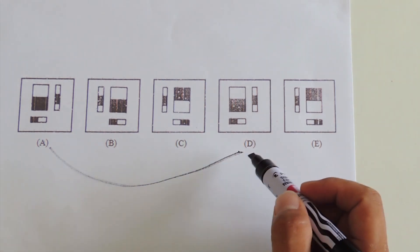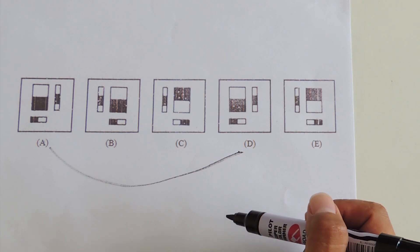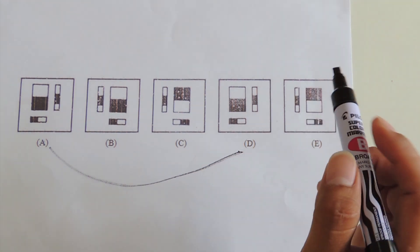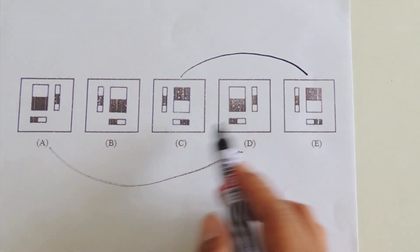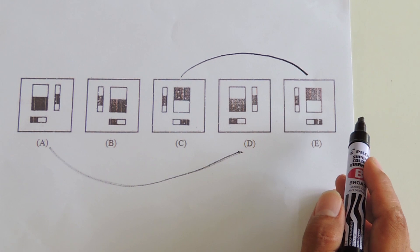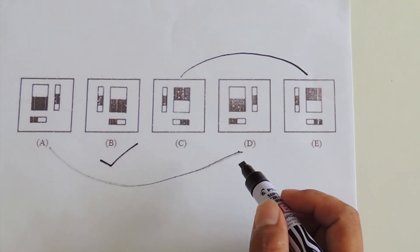It is obvious that these two cannot be the possible answers. Options C and E would also be eliminated since these two figures are also equal. That leaves us option B as the correct answer.